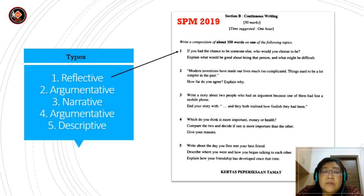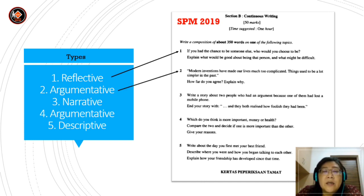Number two: modern inventions have made our lives much too complicated. Things used to be a lot simpler in the past. How far do you agree? Explain why. So this is more on giving opinions, so it is argumentative.